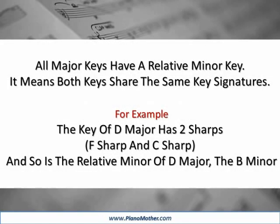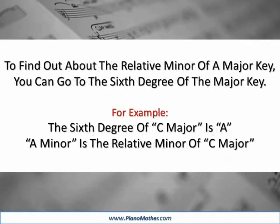All major keys have a relative minor key. It means both keys share the same key signatures. For example, the key of D major has two sharps, F sharp and C sharp, and so does the relative minor of D major, B minor. To find out the relative minor of a major key, you can go to the sixth degree of the major key.